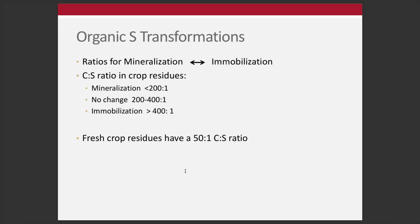To put this in perspective: fresh crop residues might have a carbon-to-sulfur ratio of about 50:1, meaning they're sulfur-rich products. A fresh residue is almost always going to contribute sulfur from a mineralization perspective, because at 50:1 you'd need to reach 200:1 before there's no net release.